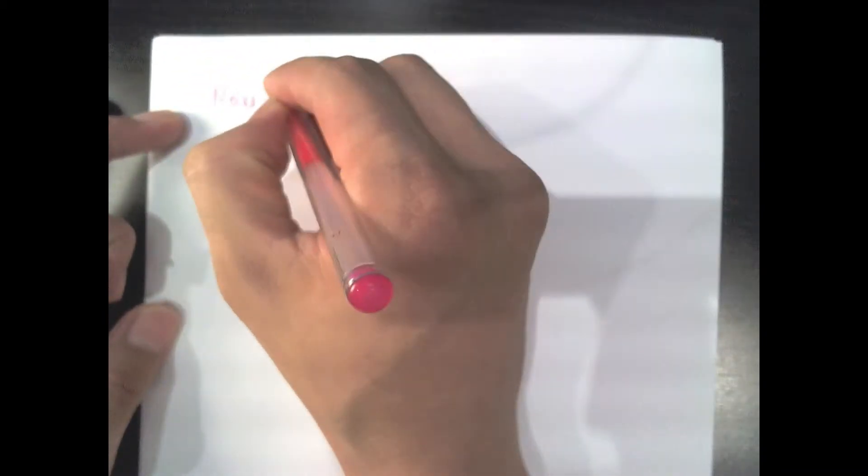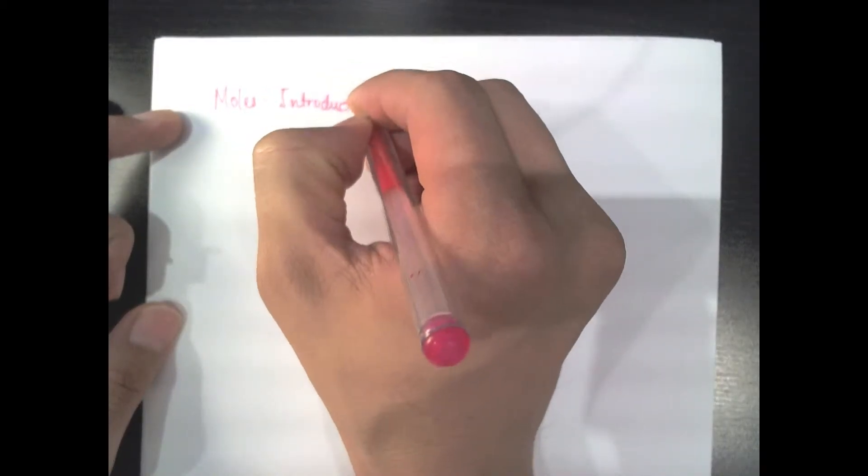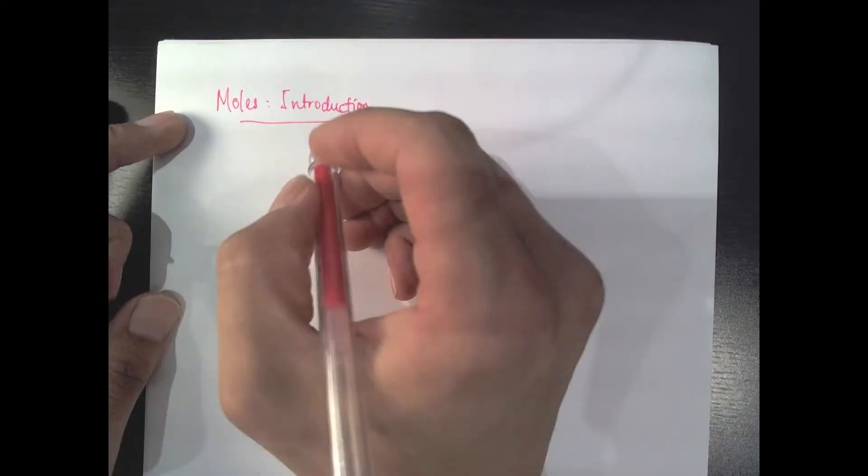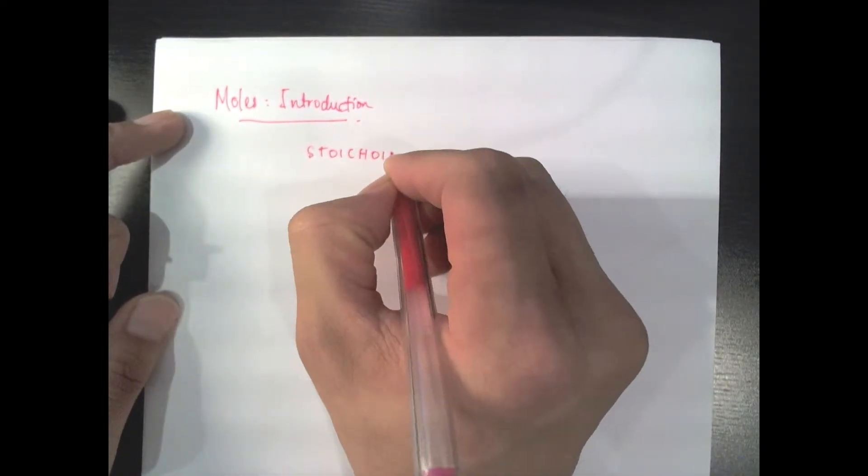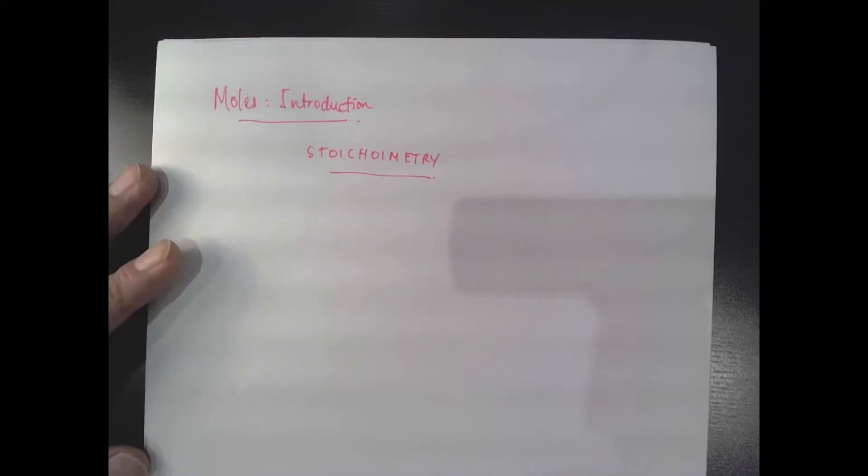Hey guys, today we're going to go into an introduction of moles and this is formally an introduction to a branch of chemistry called stoichiometry, which is basically a way to count things in chemistry.